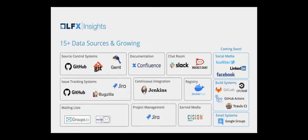The next wave will include an increased focus on social media — Twitter, LinkedIn, Facebook — and different build systems like GitHub Actions, Travis CI, Circle CI, and GitLab. We're also expanding to Google Groups for mailing lists. This will keep growing, but this gives a snapshot of what is supported today and what's coming relatively soon.